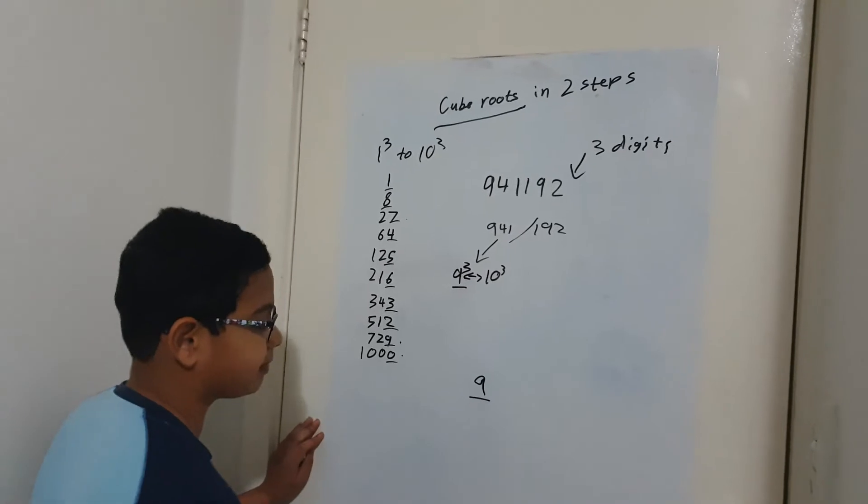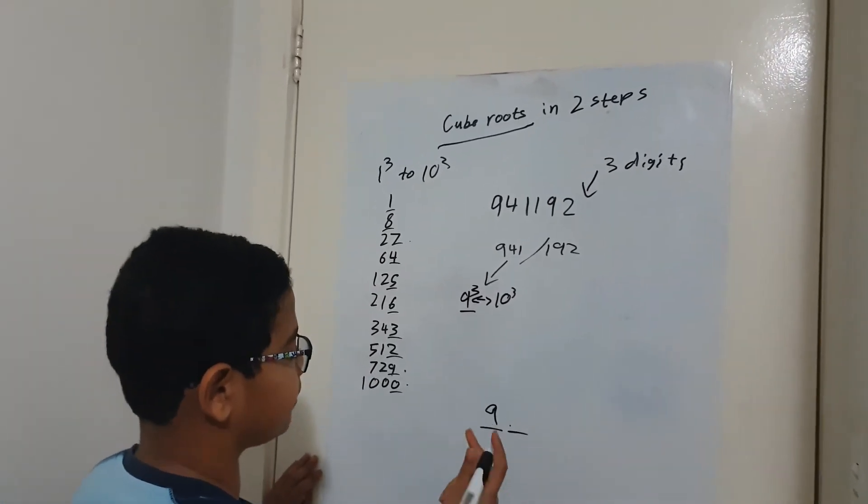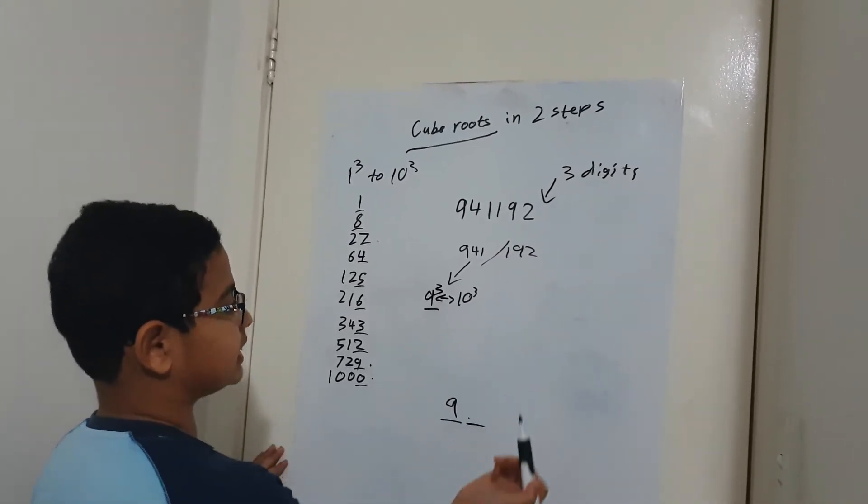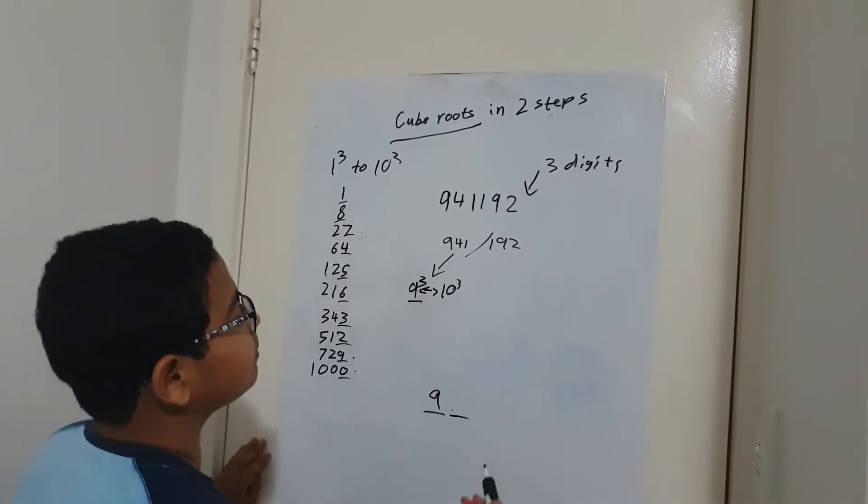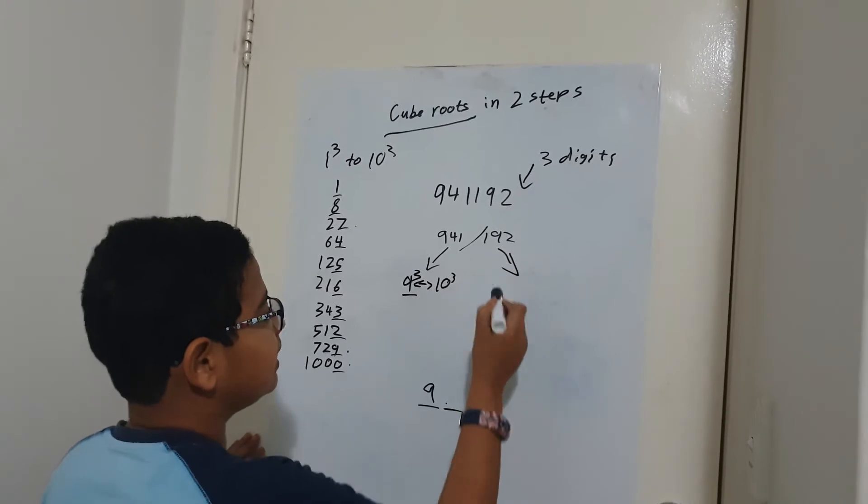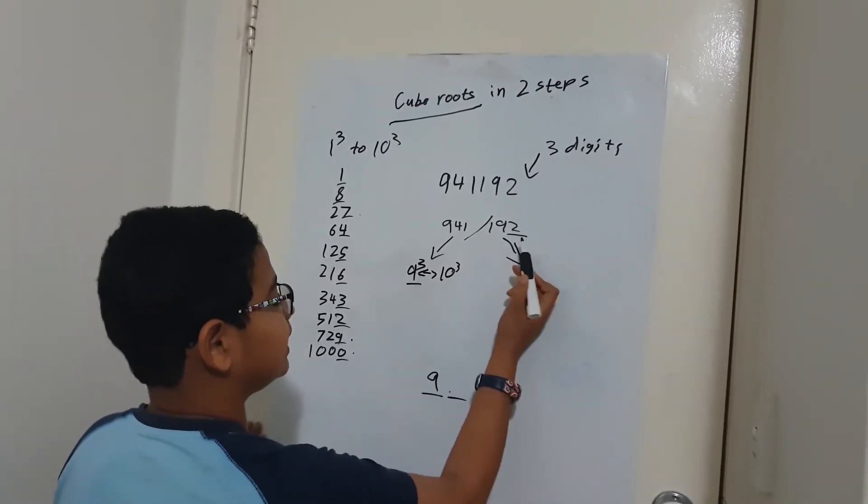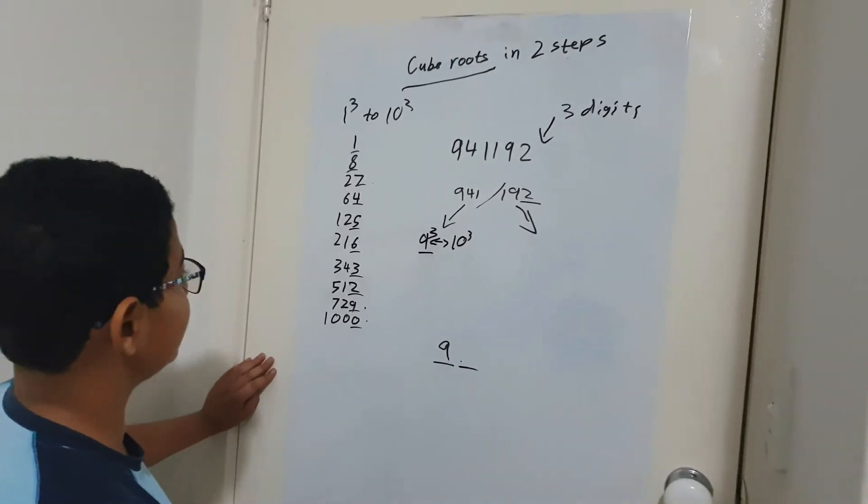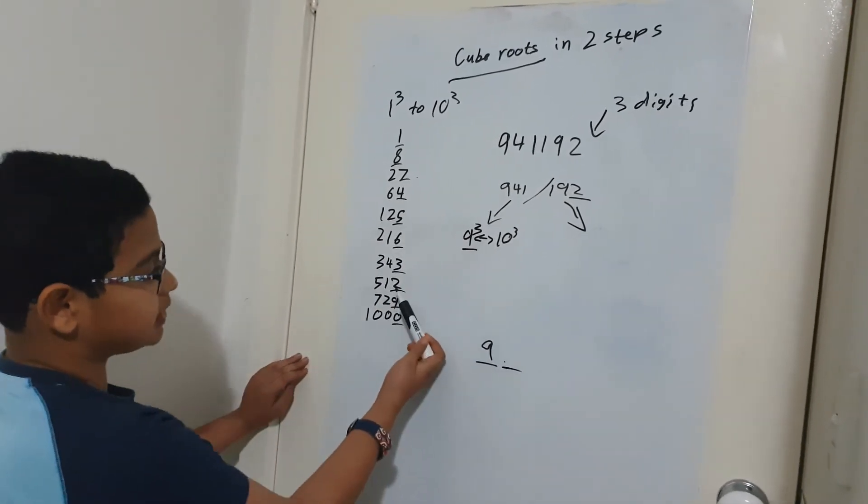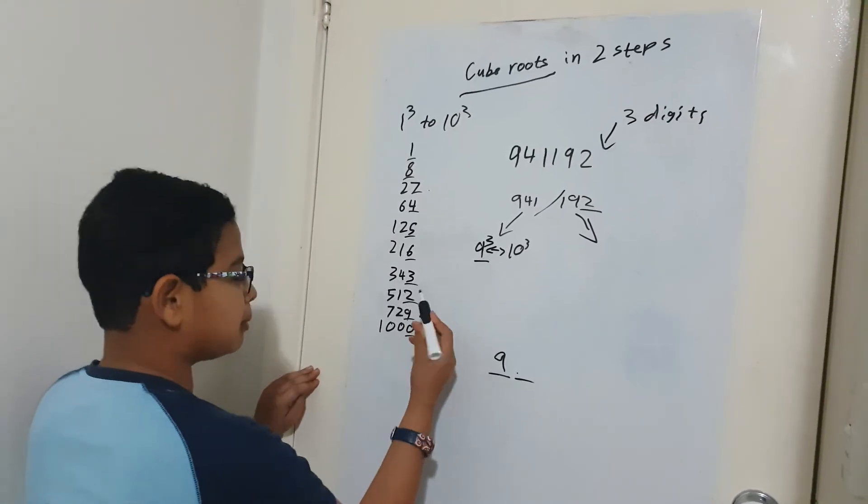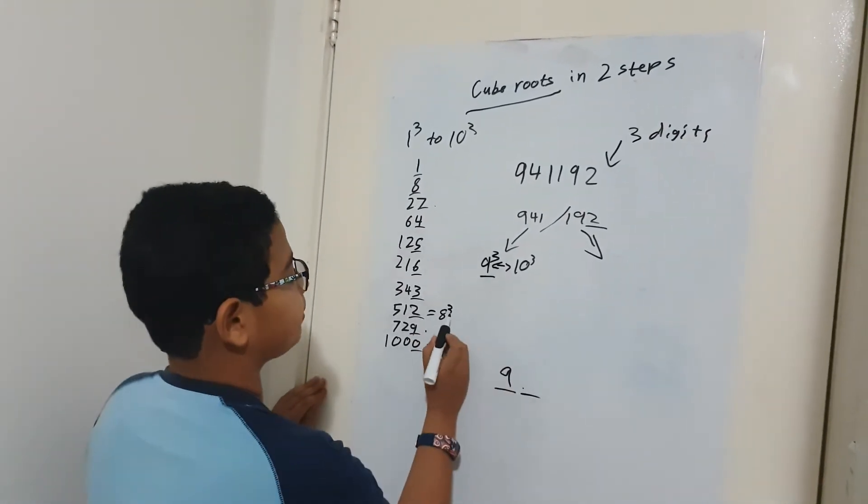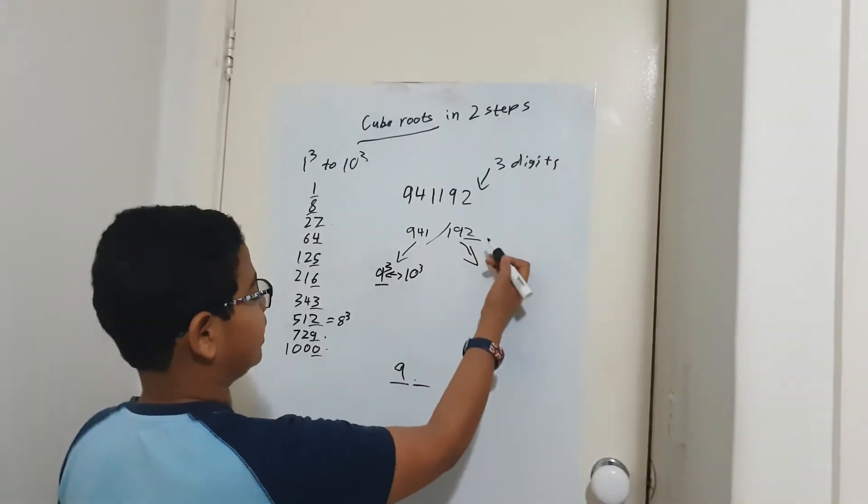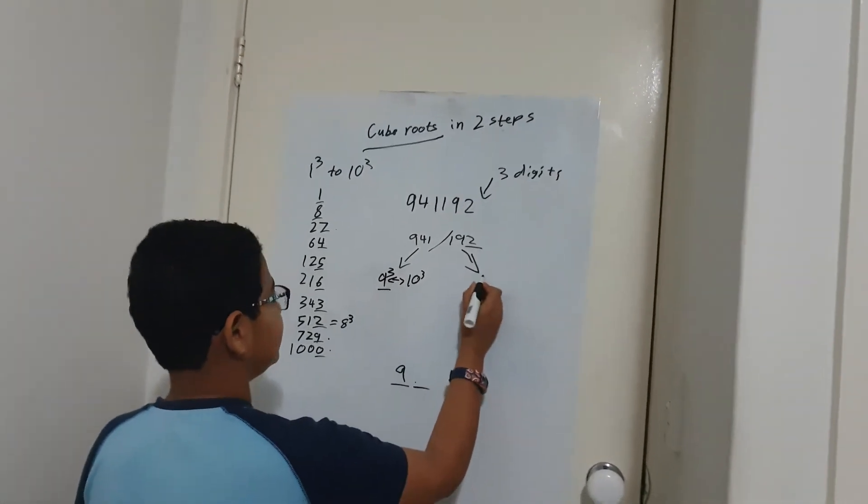So over here, and the second digit, for the second digit we will need to take the second part. So obviously that's 192. So we take 192 and we want to see the ending number. So in our case it's 2, and we want to see which other cube ends with 2. So this one does, and that is the cube of 8. So we need to take 8 as the number.